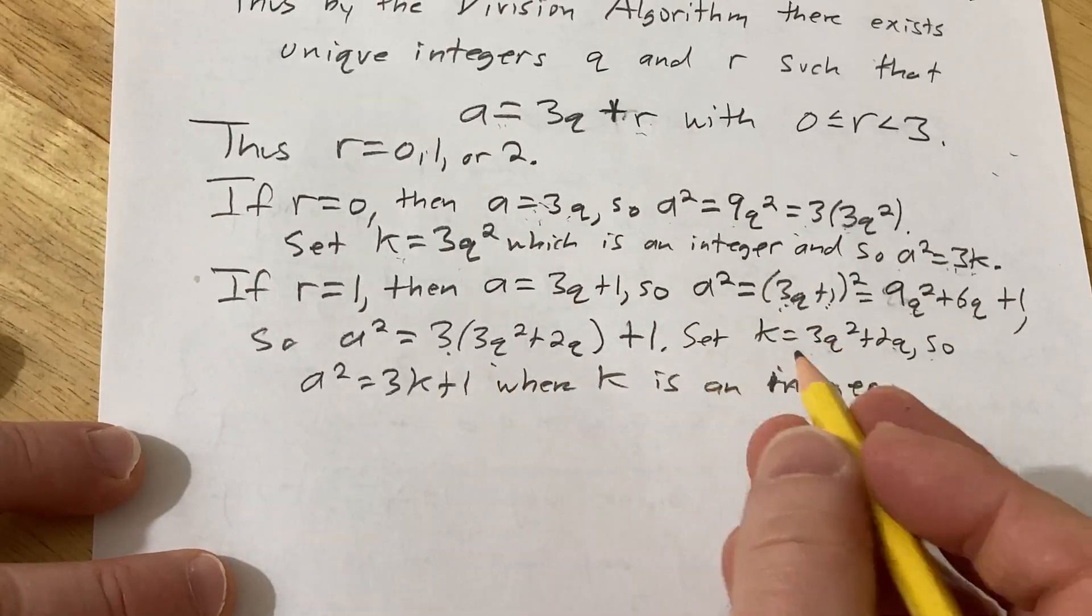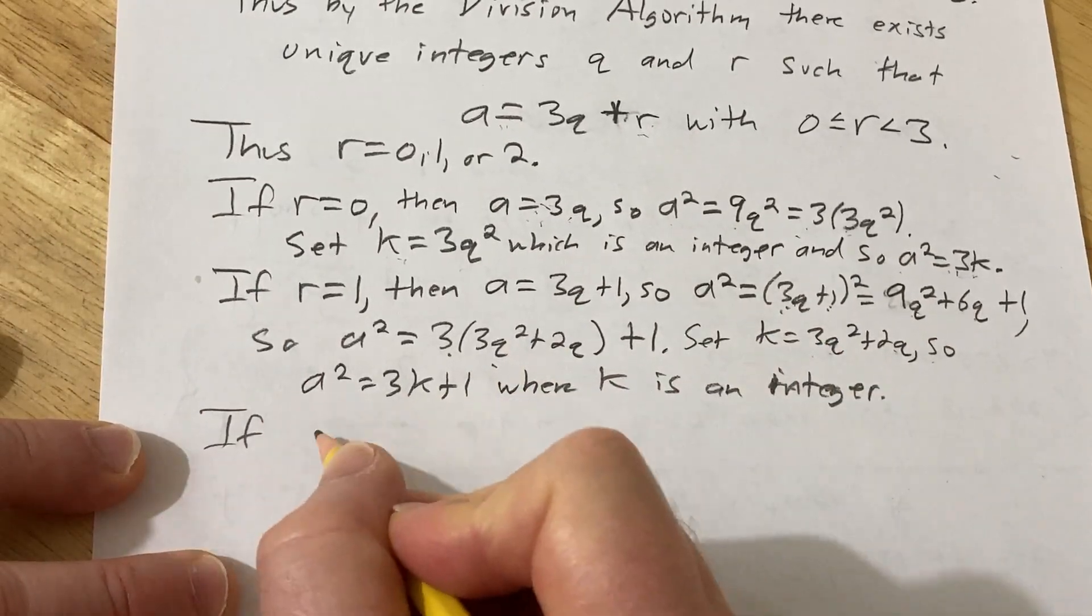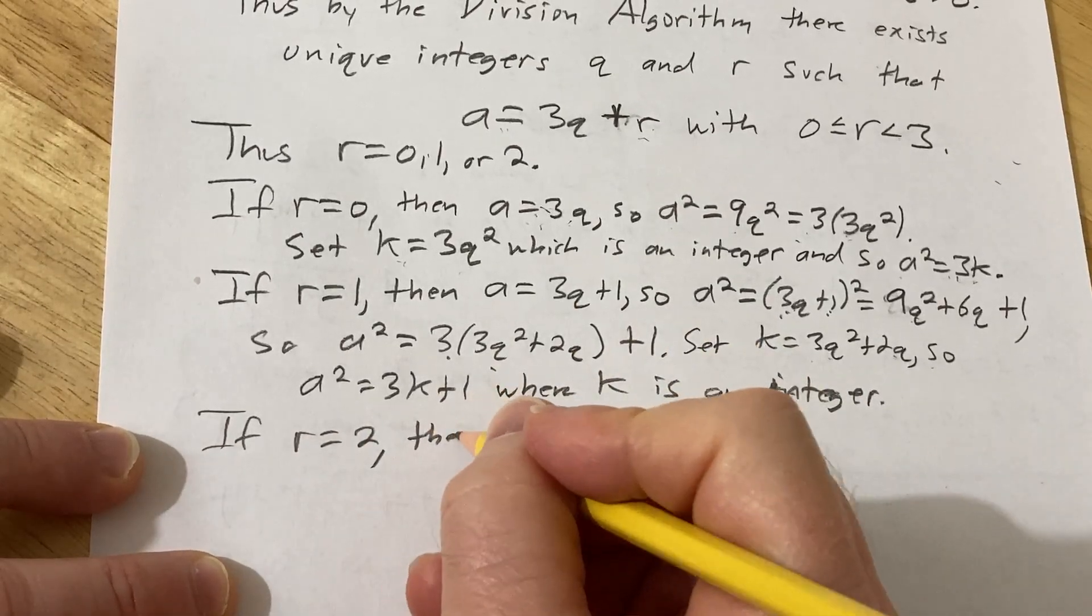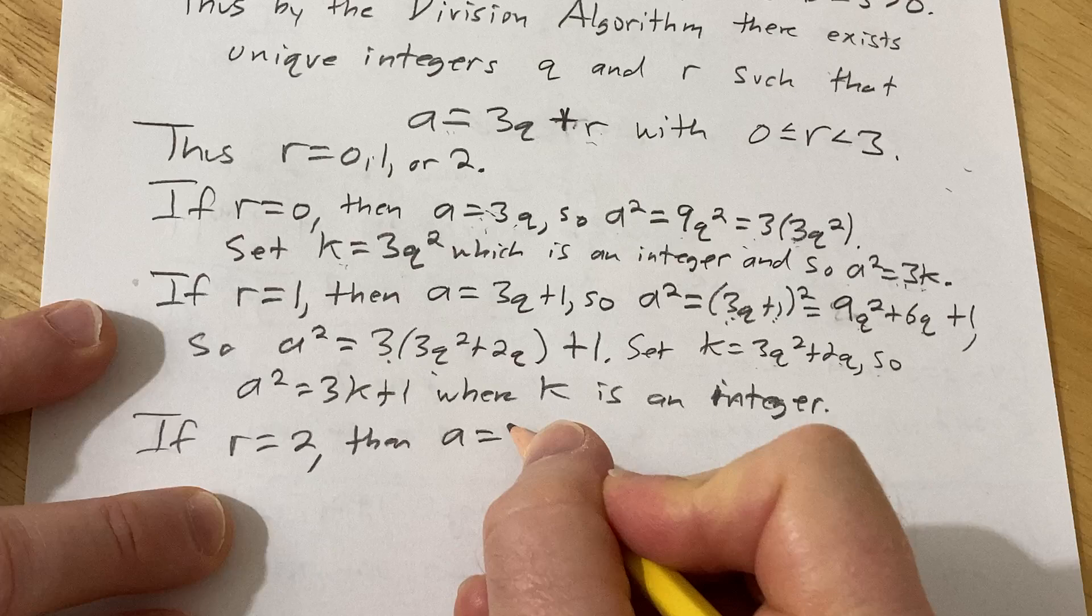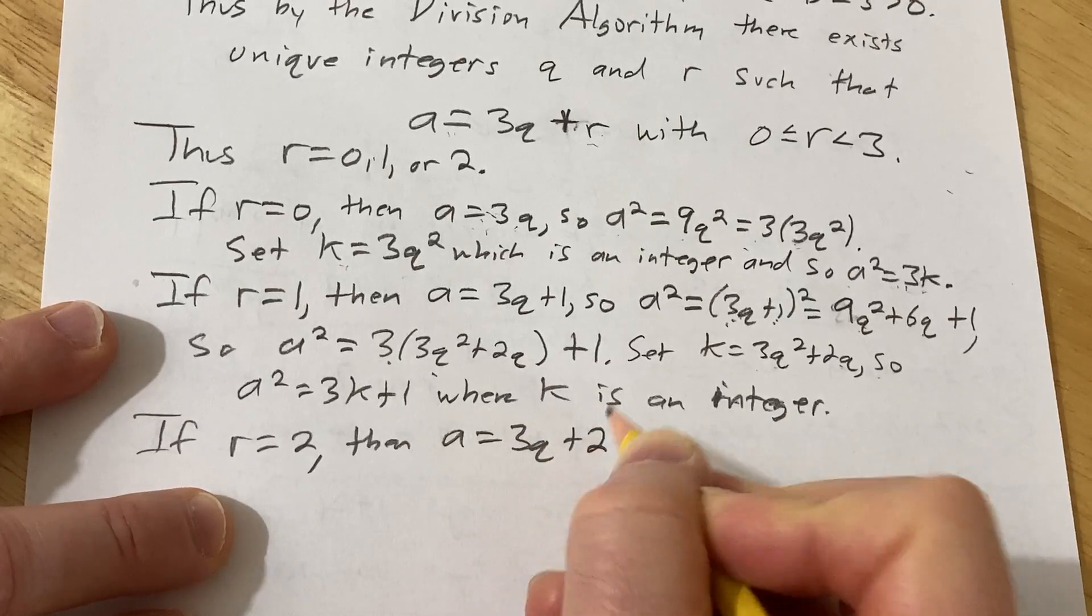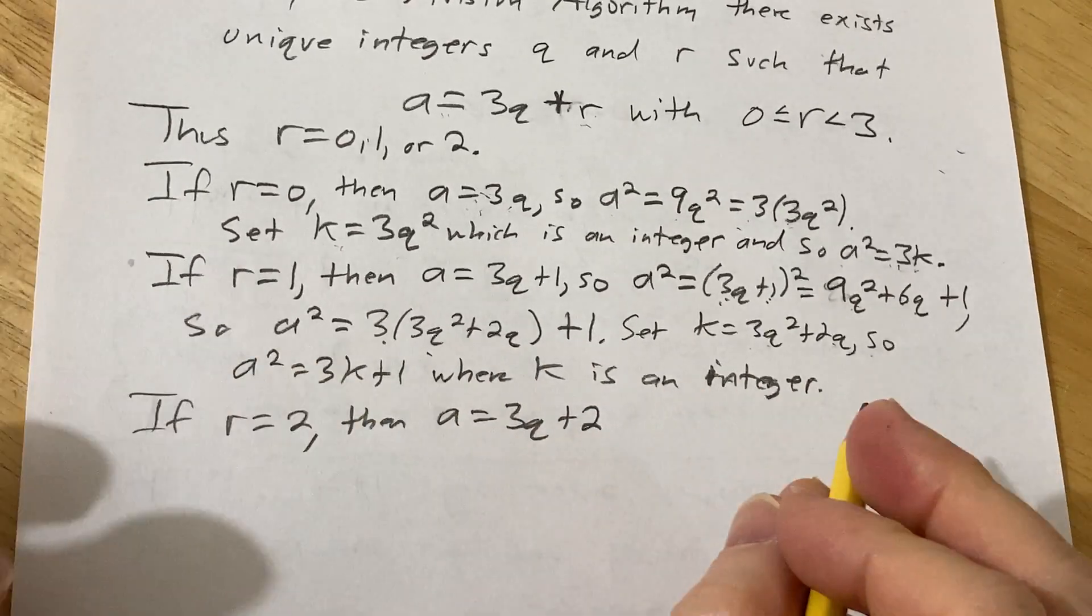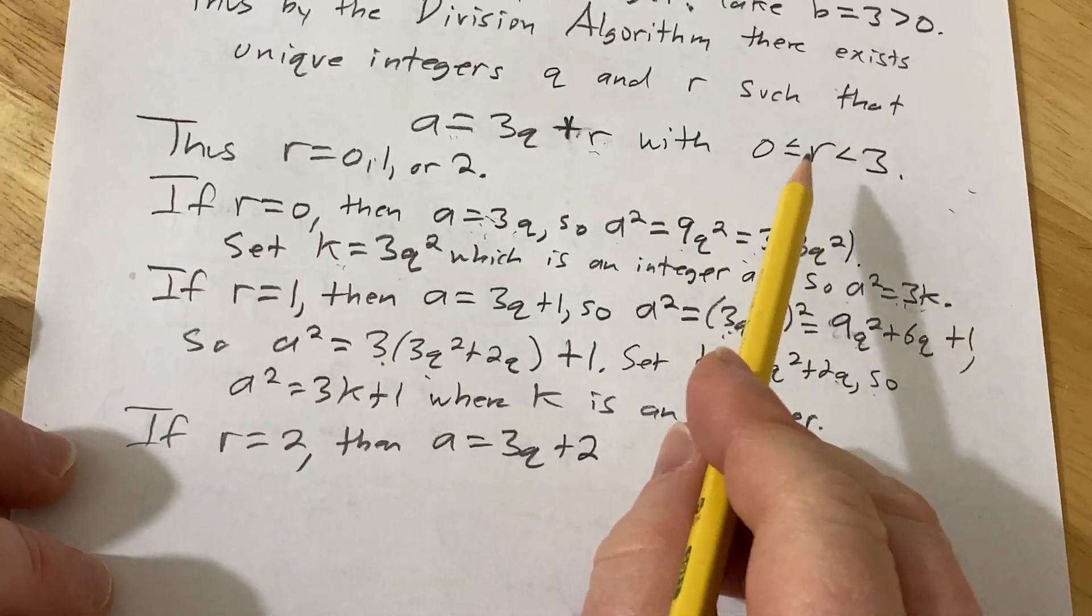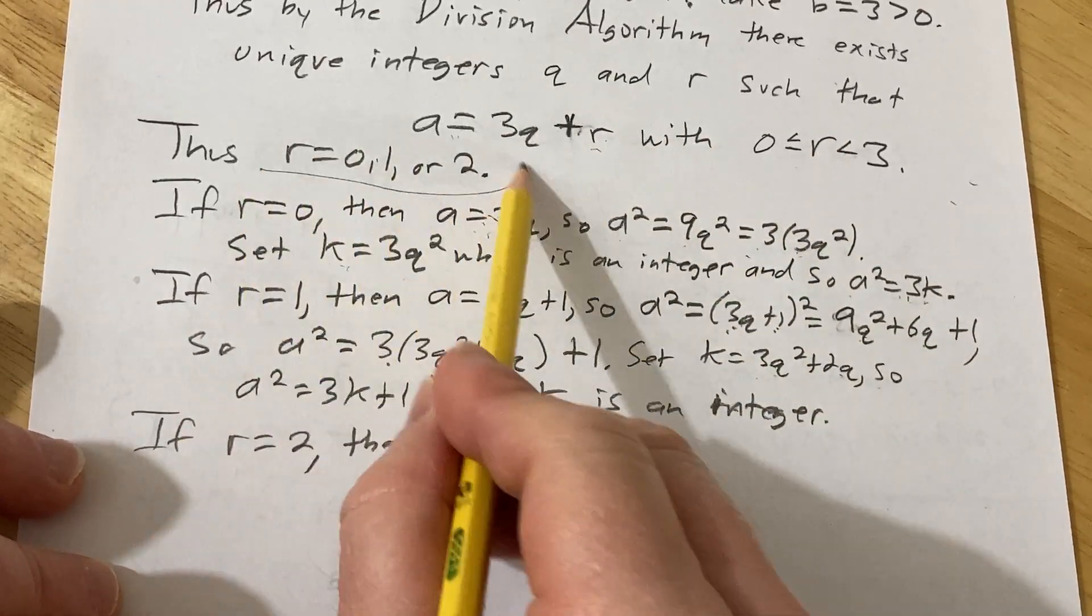Last and certainly not least, if r equals 2, then a is equal to 3q plus 2. You can do all kinds of interesting results and problems using this strategy with the division algorithm. Because of that restriction on r, you see it gives you choices, which is pretty cool.